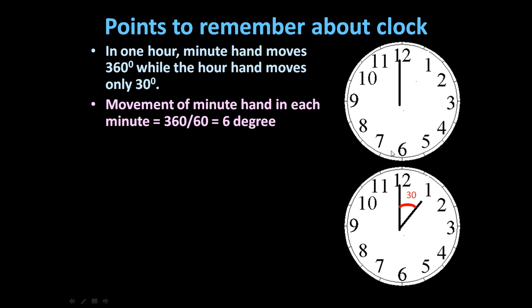This means in every minute it will move 6 degrees, and in 60 minutes it moves 360 degrees. Now if we see the hour hand, in one hour it makes only a 30-degree angle.